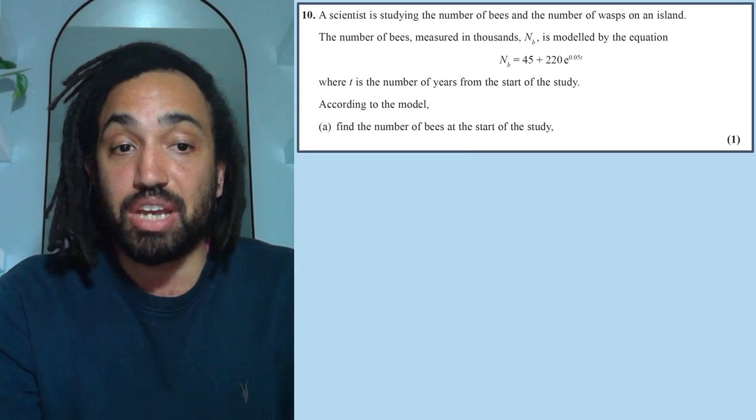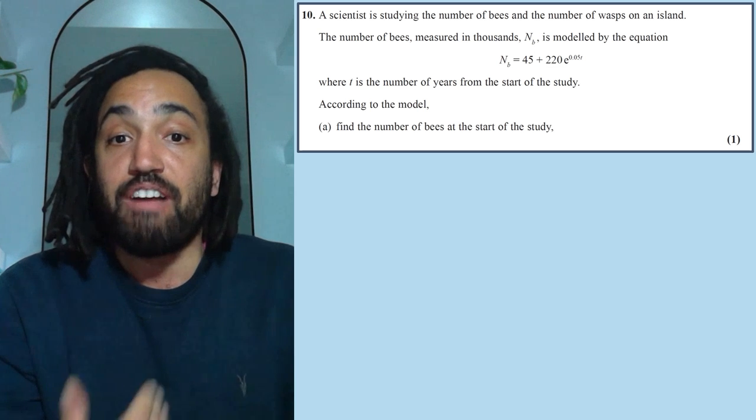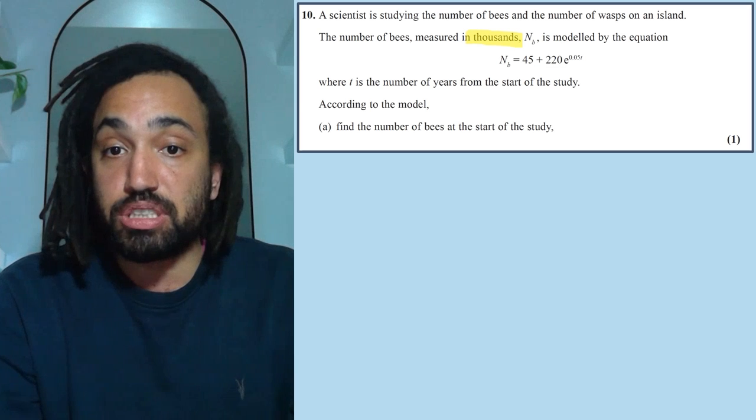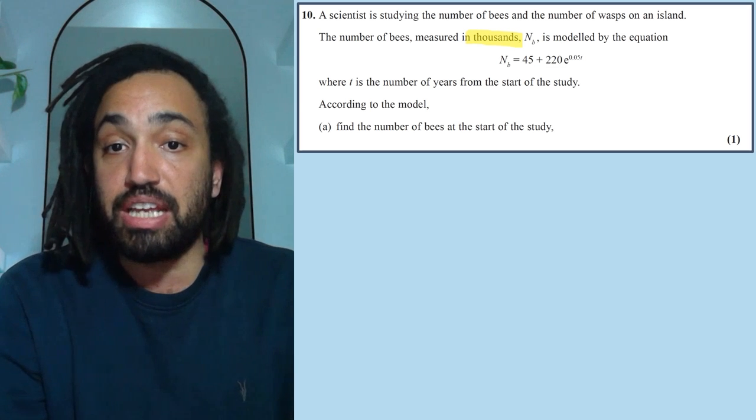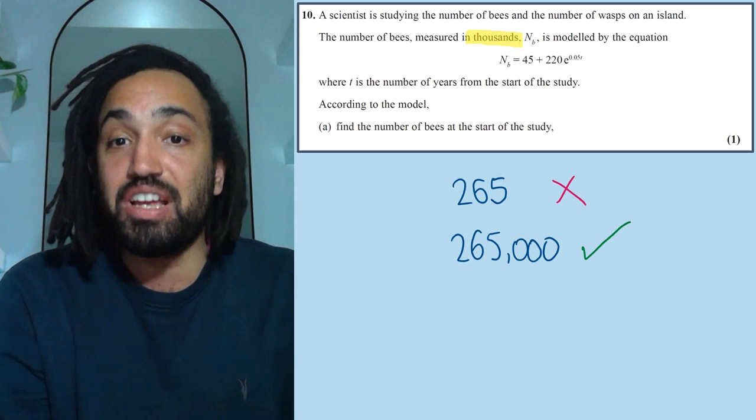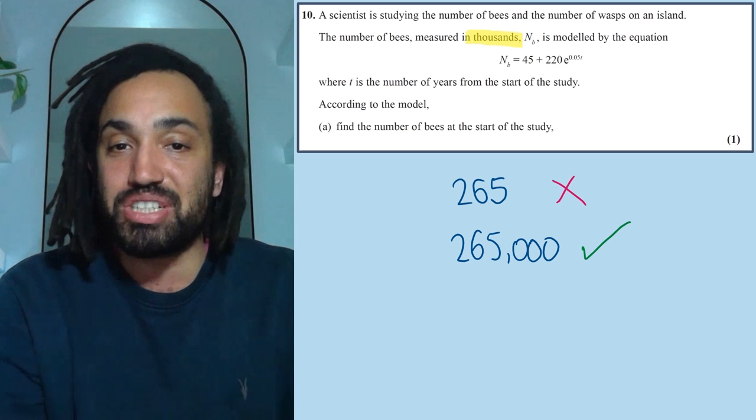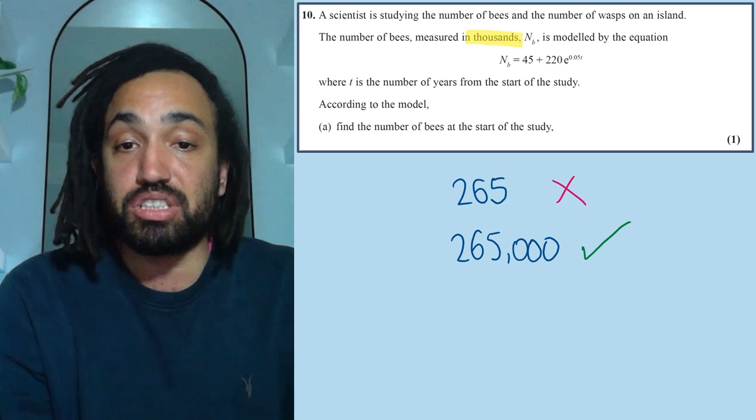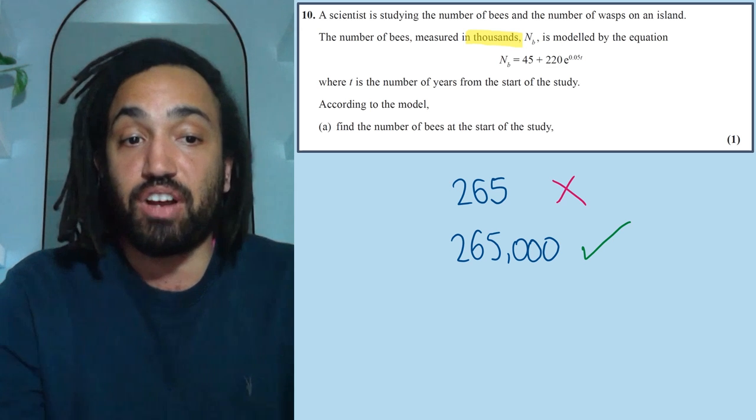Next question, and I've made a mistake on this myself, when it asks for thousands of Bs in the question. Now, if I was just a sub in T equals zero initially, then I would get an answer of 265. But because the question says that Bs are measured in thousands, it means the actual answer is 265,000.